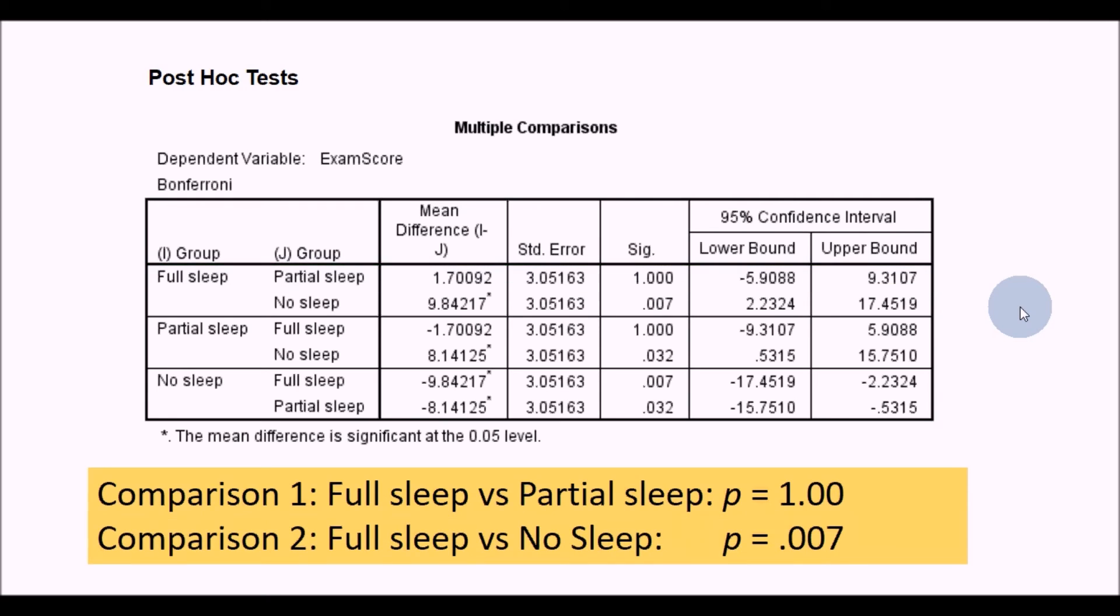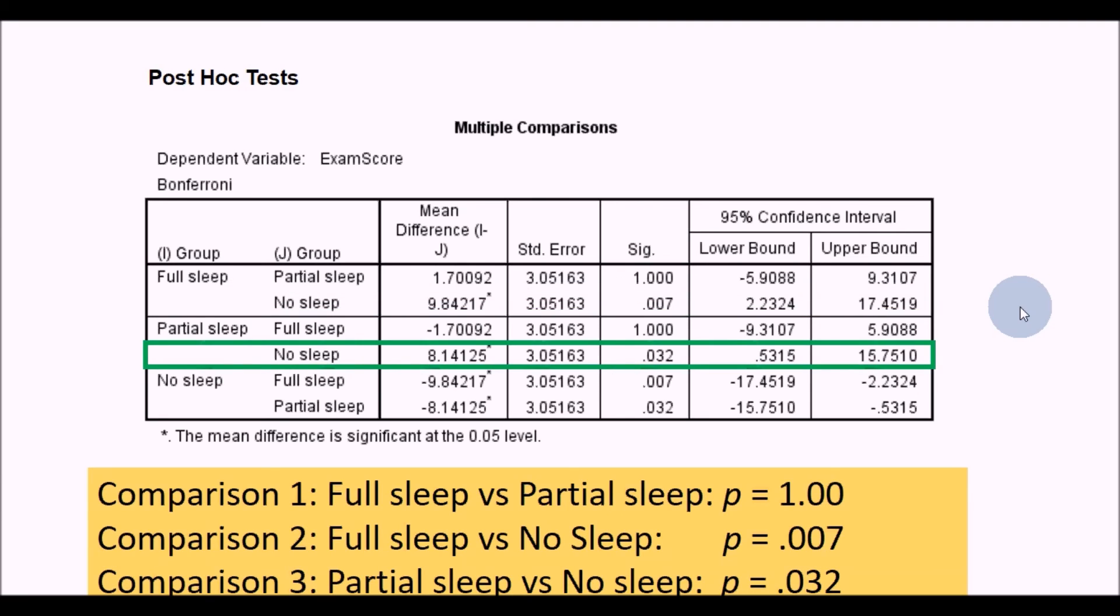The second comparison we want to make was full sleep versus no sleep, and you can use this row here. This is comparing the first group full sleep with another group, now no sleep. Read along the line - the p-value now is 0.007, so that was significant. The next row of data we've already looked at because that's just comparing partial sleep with full sleep again. This time we go to this row, and this is now comparing partial sleep with no sleep. Read along the line and the p-value is 0.032, so that was also significant. We've got two significant comparisons, one non-significant comparison.